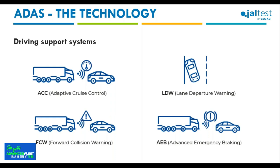We also have the LDW — Lane Departure Warning — which alerts drivers whenever they drift out of their lane using visual, vibration, or sound warnings. These systems rely on road markings to determine lane position. Then there is the FCW — Forward Collision Warning — designed to warn drivers if they are about to crash into a slower-moving or stopped vehicle or any other object ahead.